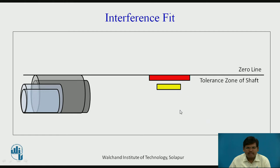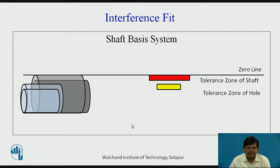The tolerance zone of the hole is always below the tolerance zone of the shaft, so the size of the hole is always less than the size of the shaft for interference fit. This system is known as the shaft base system, where the size of the shaft is fixed and the size of the hole is varied. The maximum tolerance of the shaft coincides with the zero line, whereas the tolerance zone of the hole is below it.